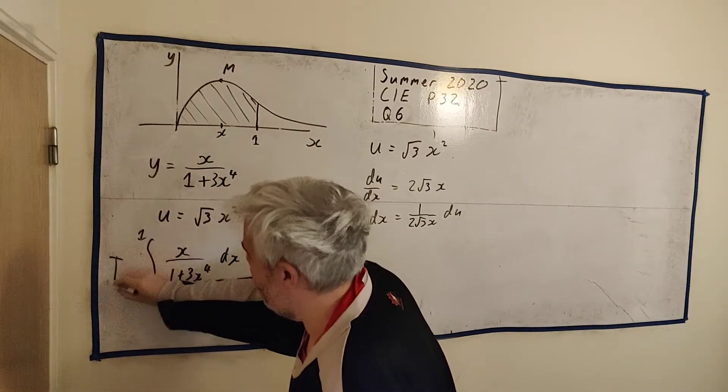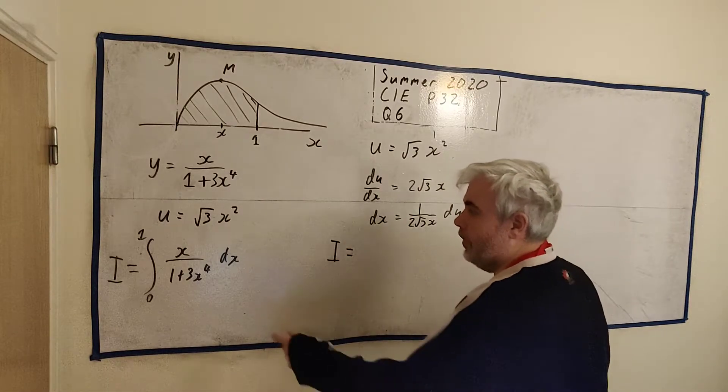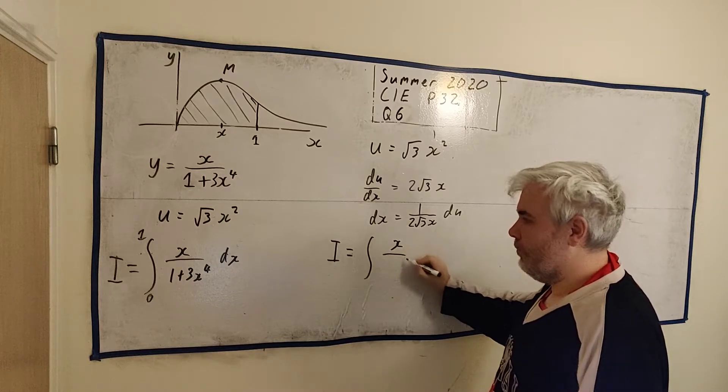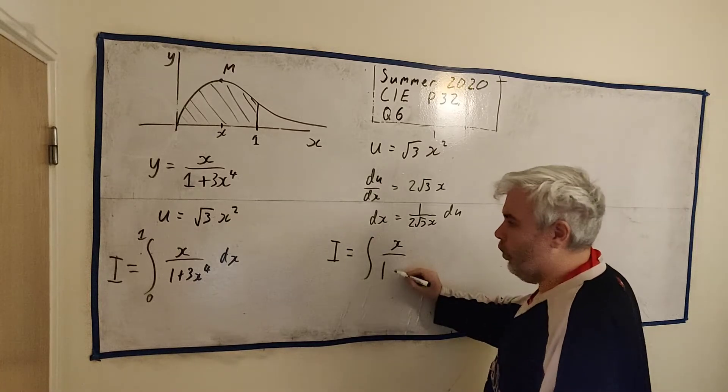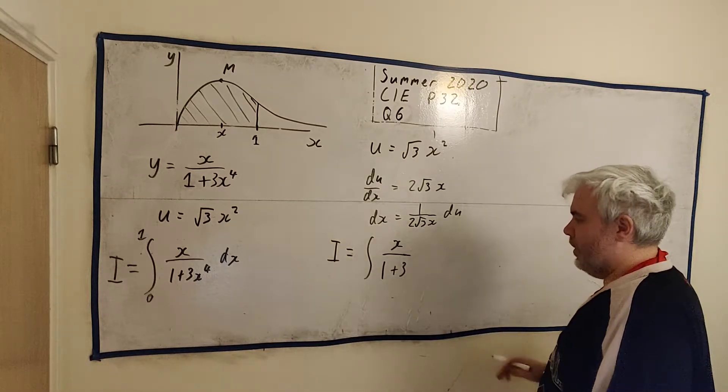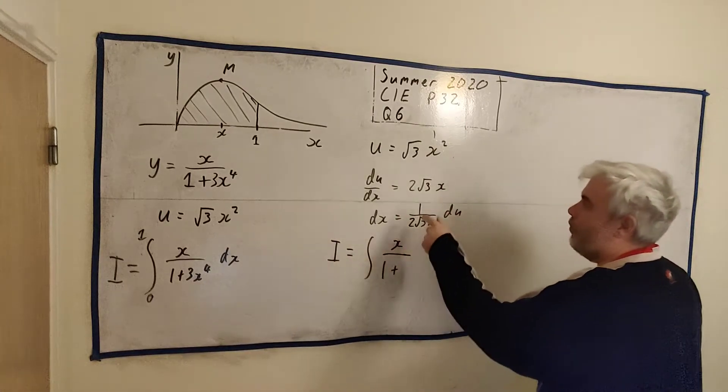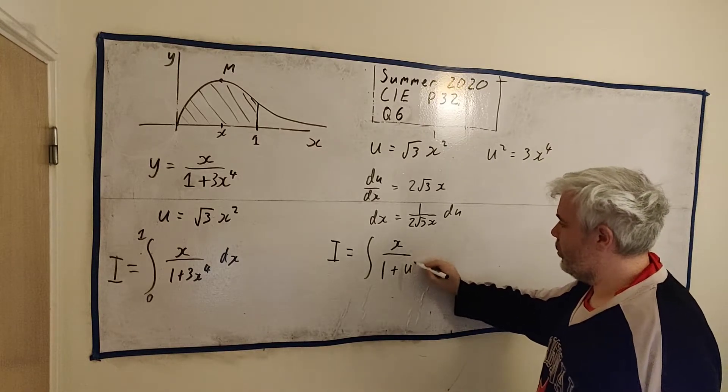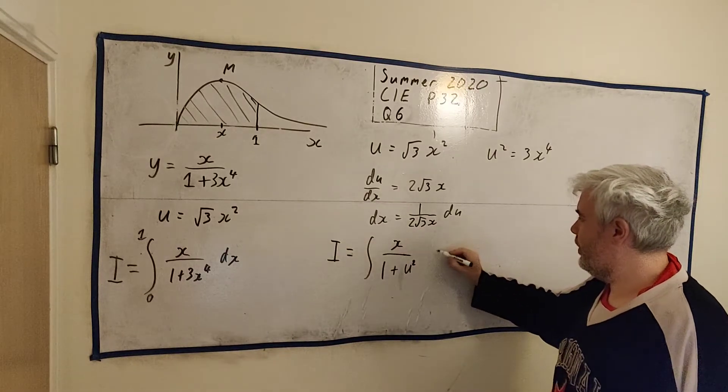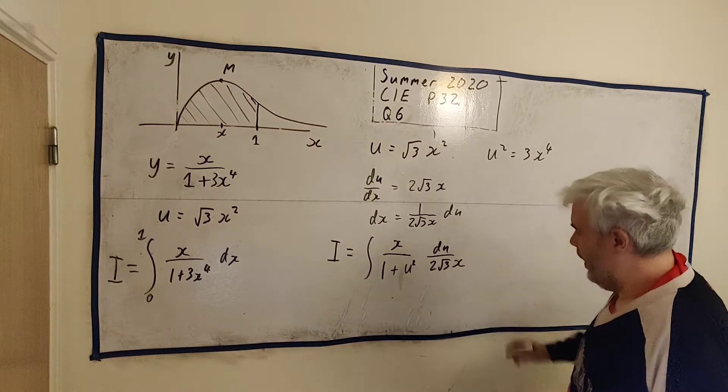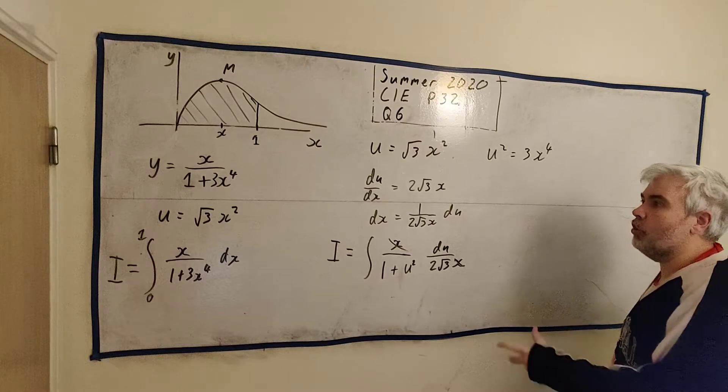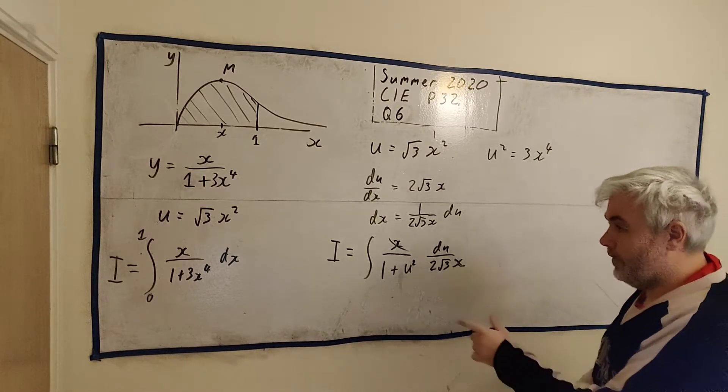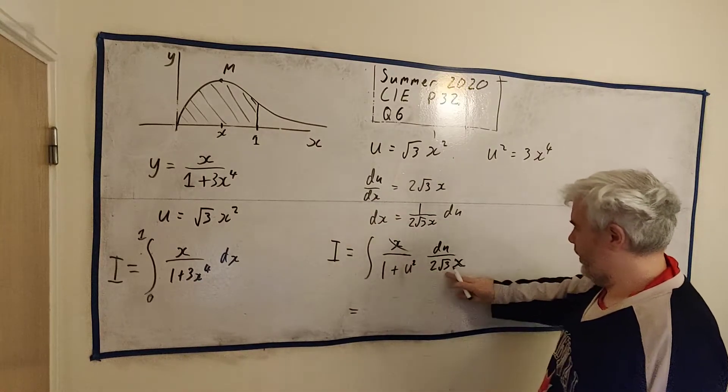So that tells us that I can be rewritten as the integral of x over 1 plus 3x to the power of 4. 3x to the power of 4 is just the same as u squared. That's why they want us to replace it. So this is just u squared. And then we replace dx with du divided by 2 square root of 3 x. And here's what we need. We need that x to cancel. It was a good substitution. Sometimes you'll be asked to pick these sort of substitutions.